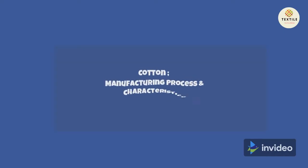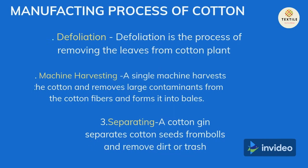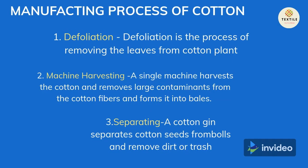Cotton Manufacturing Process and Characteristics. The manufacturing process of cotton begins with defoliation — the process of removing the leaves from the cotton plant.